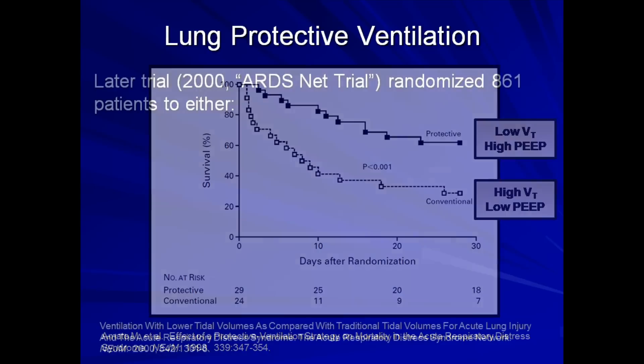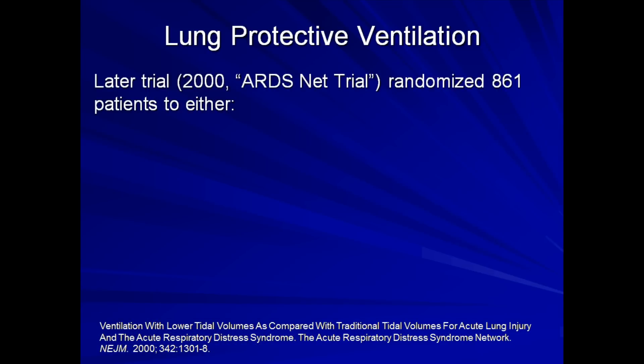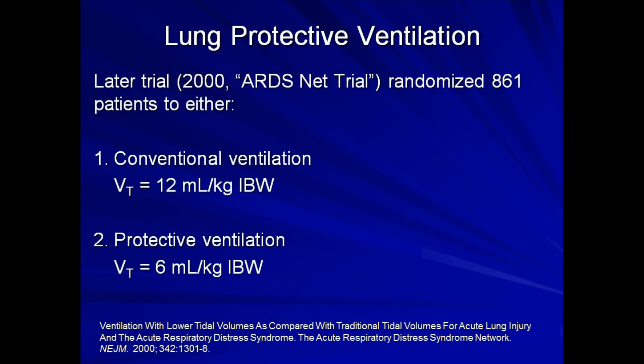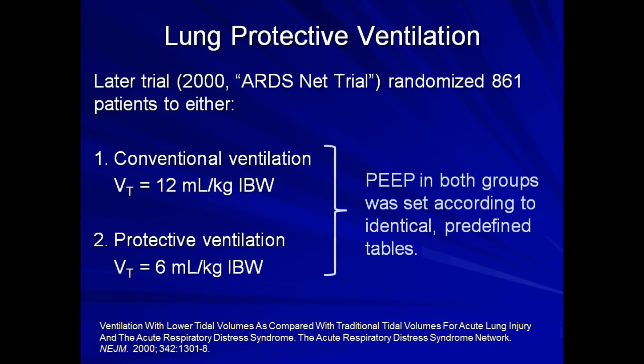In 2000, the ARDSNET trial randomized 861 patients to a tidal volume of either 12 mL per kg or 6 mL per kg of ideal body weight. Unlike the last trial, the PEEP in both groups was set according to identical predefined tables. In other words, only one variable was being tested.